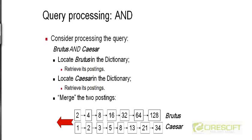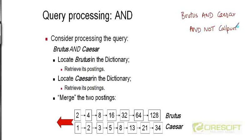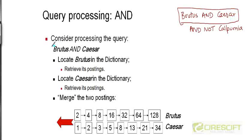Now, having seen what an inverted index is, let's go back to our query 'Brutus AND Caesar AND NOT Calpurnia' and try to see how we can use the inverted index to answer this query. Let's start from an even simpler query — just an AND query of Brutus and Caesar. So consider processing the query Brutus AND Caesar. How do we use the inverted index?